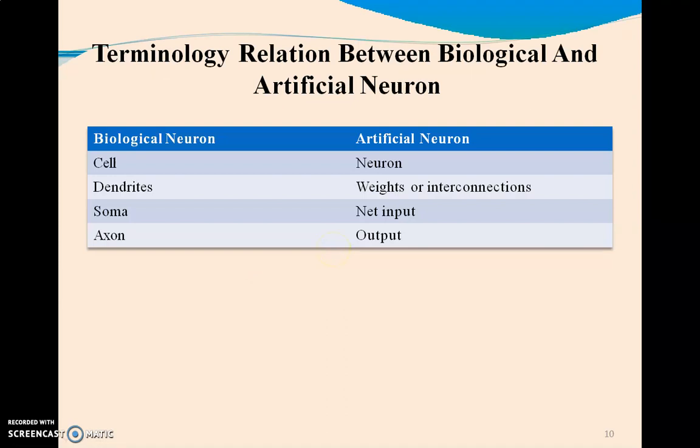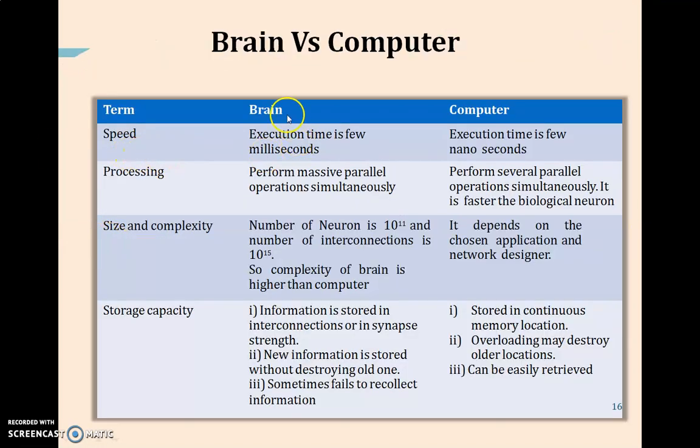How do we compare the biological neural system with artificial neural networks? The cell is now the neuron. Dendrites are the weights or interconnections. Soma is the net input. Axon is the layer where we pass the output. Speed in the brain has an exhibition time of a few milliseconds, but the computer is a few nanoseconds. The brain can do parallel processing, but several parallel processes can be done simultaneously using computer systems. It is faster than the biological neuron. For size and capabilities of the brain, the number of interconnections is 10^11 and 10^15. The complexity of the brain is higher than the computer, but it depends on the application and the network engineer who is designing the ANN.